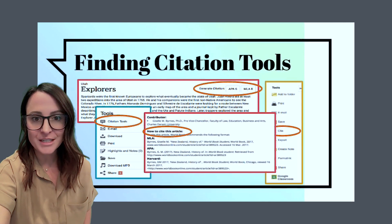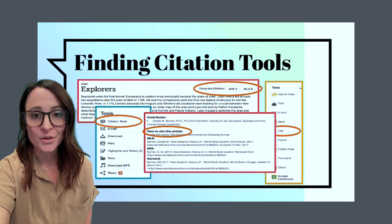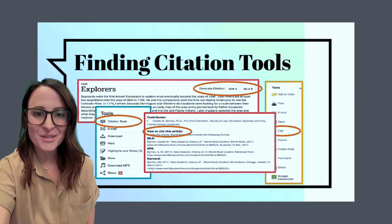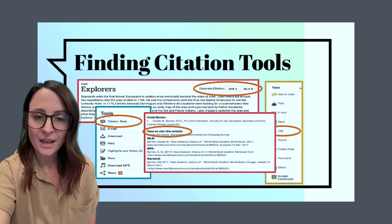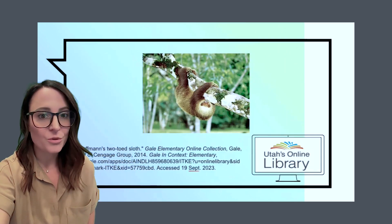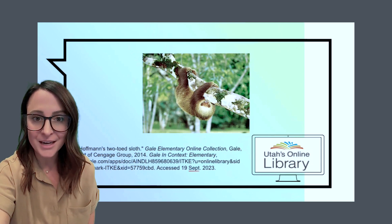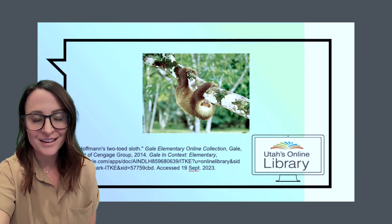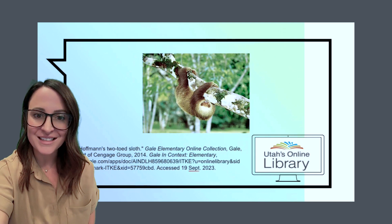Another way to show great digital citizenship is to cite your sources. So next time you use an image off the internet, make sure to put where you got it from. In Utah's online library, you can scroll to the bottom of the page and get a source citation, and then just pop that right into your slides.